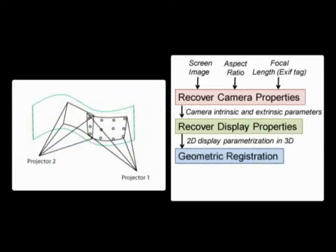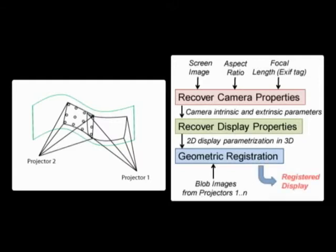To register the display we first take a sparse set of correspondences between the projector and the display coordinates. This is done by displaying a sparse grid of blobs which are captured by the camera and then related to the display coordinates using the estimated camera calibration matrix. Finally to define the mapping between the projector and the display coordinates we fit a rational Bezier to this sparse set of correspondences.